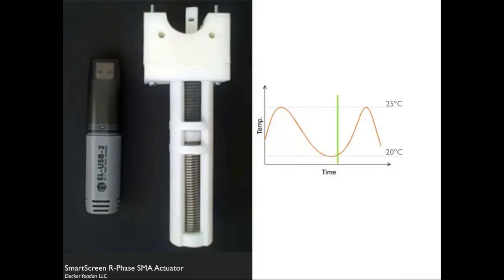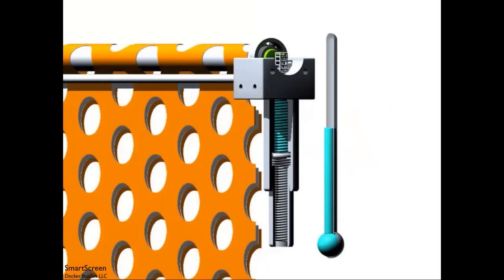This is the first prototype, or part of the first prototype, where we had materials engineers create this particular shape memory alloy spring, and gear it towards room temperature between 20 and 25 degrees Celsius. It's a very small cycle for a shape memory alloy. Usually they need changes in temperature that are much larger, but the scientists were able to dope the nickel titanium with certain impurities, which allowed us to gear it to that very small increment.